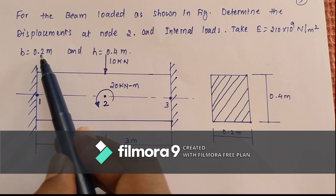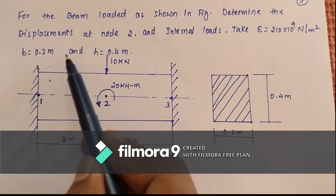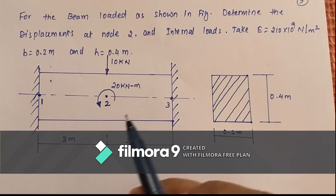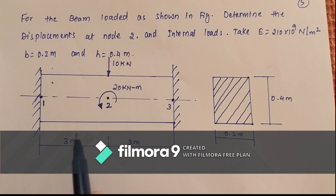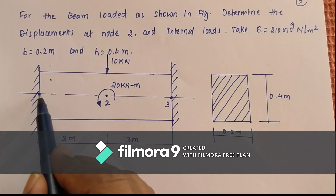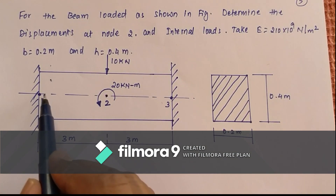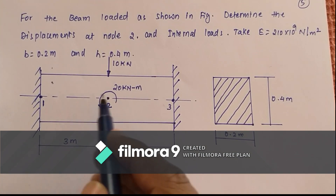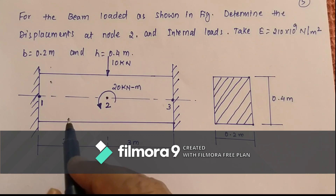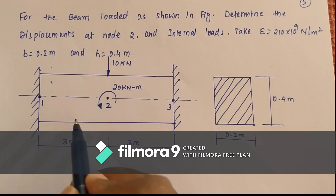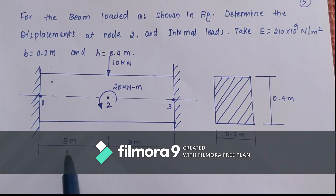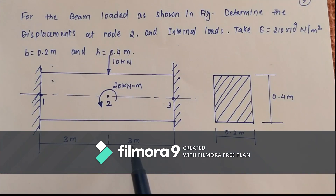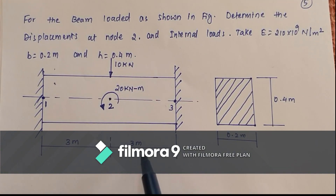The cross-section values are given so we can find out I. The nodes are given in the structure, and we split this into two elements: element 1 with 3 meters length and element 2 with 3 meters length.